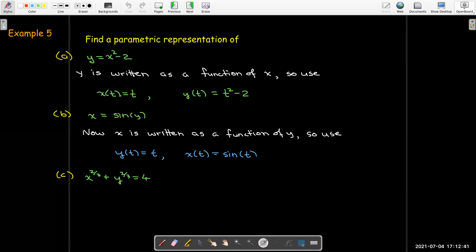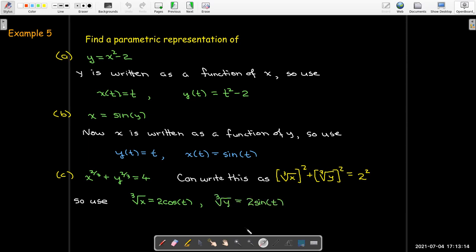And in the last one, we have x to the 2/3rds power plus y to the 2/3rds power equals 4. So I can think of x to the 2/3rds power as the cube root of x squared. y to the 2/3rds power is the cube root of y squared. And 4 equals 2 squared. And so I want to have what's squared here set to r cosine of t. And what's squared with the y is going to be r sine of t. And I can cube both sides of each equation to get x equals cosine cubed of t. y equals 8 sine cubed of t.